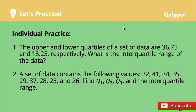And that's all for today. Now I want you to solve these two problems for individual practice. First problem: the upper and lower quartiles of a set of data are 36.75 and 18.25 respectively — what is the interquartile range? Second problem: a set of data contains the following values — find the 1st quartile, 2nd quartile, 3rd quartile, and the interquartile range. Comment your answers below so I can check if you really learned from this discussion. Thank you for watching.